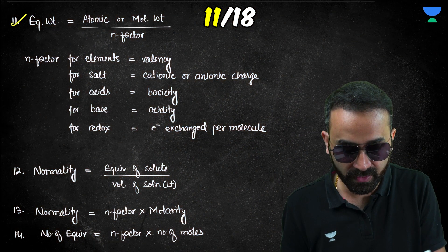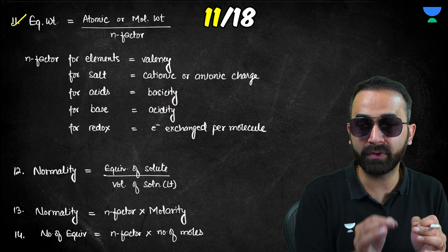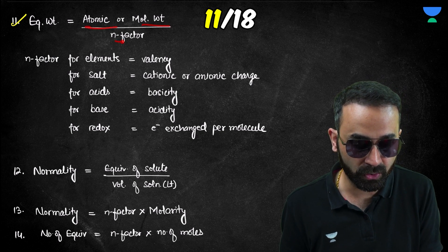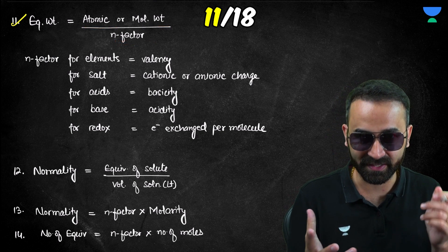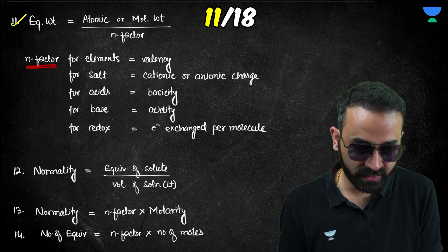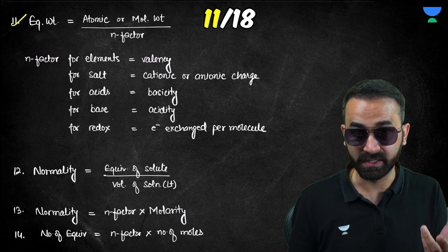Formula eleven is equivalent weight, which equals atomic or molecular weight divided by the n-factor. For an element, the n-factor is equal to its valency — for example, magnesium has valency 2 and aluminium has valency 3.